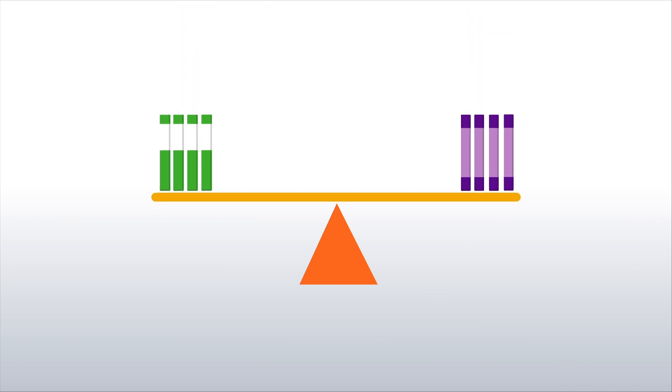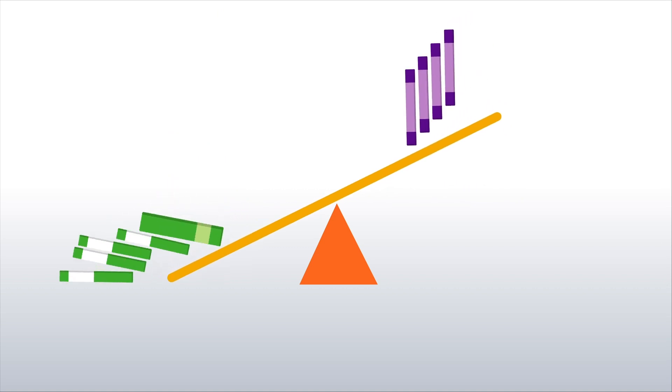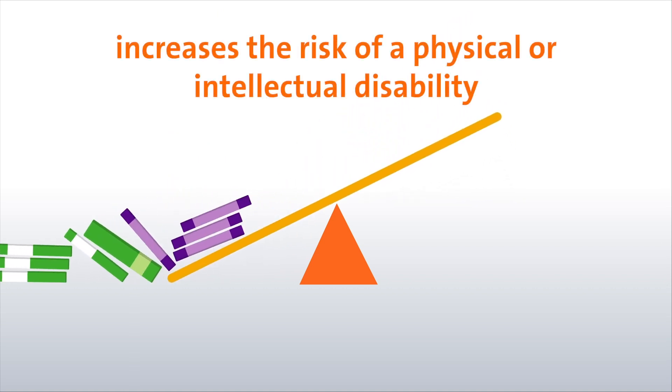Having an imbalance in the amount of chromosome material or an error in the DNA code within a gene increases the risk for physical and or intellectual disability in your child.